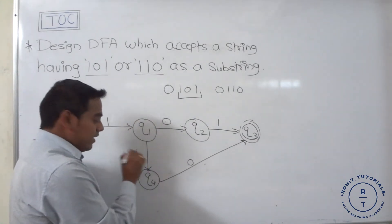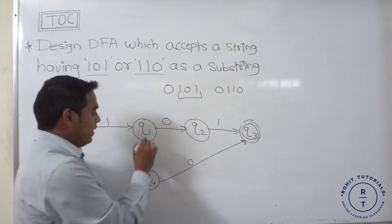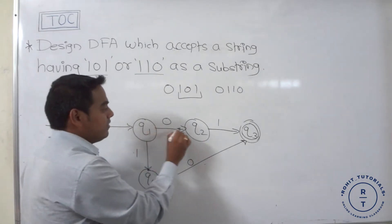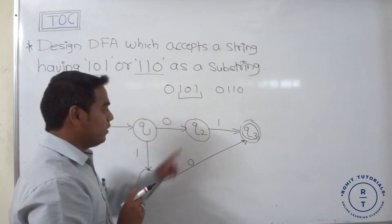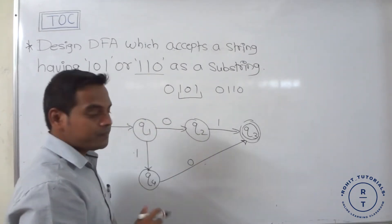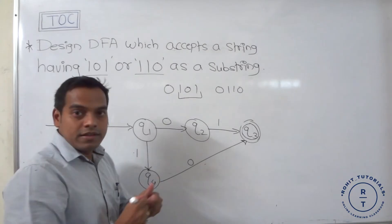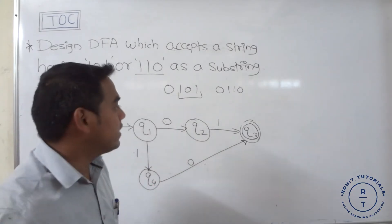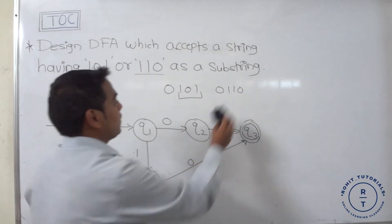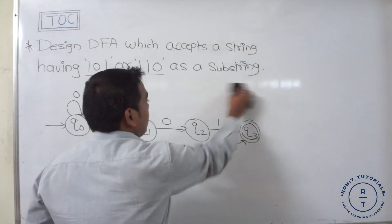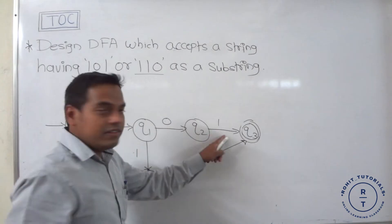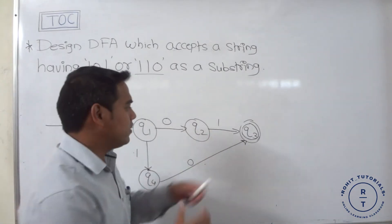At Q1 state, the 1-transition and the 0-transition are both completed. Now what about Q2? At Q2 state, the 1-transition is completed.